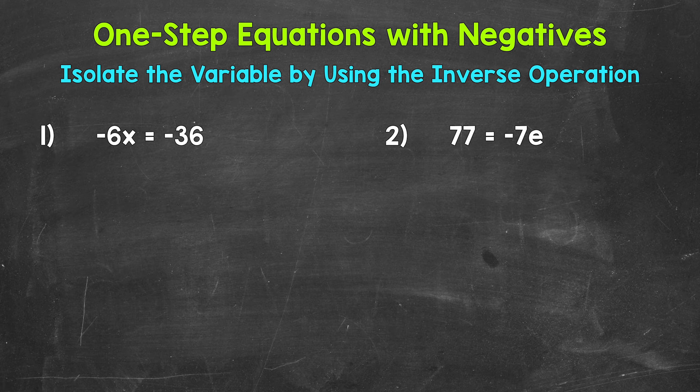When we solve one-step equations with negatives, we solve them the same way we solve one-step equations that have only positives. We want to isolate the variable, which means get it by itself. We do this by using the inverse operation, which means the opposite operation — we want to undo whatever is being done to the variable. Whatever is done to one side of the equation must be done to the other in order to keep everything balanced and equal.